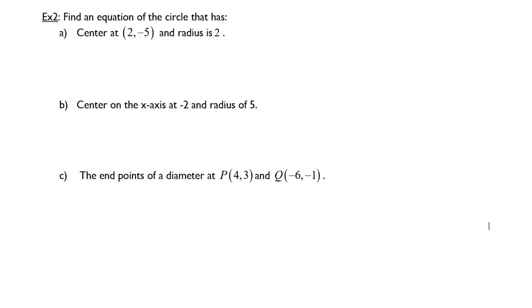In part two we're going to look at how to write the equation of a circle. The first example is a circle centered at (2, -5) and radius 2. We know that our original equation is x minus h squared plus y minus k squared equals r squared. That's the equation of a circle.